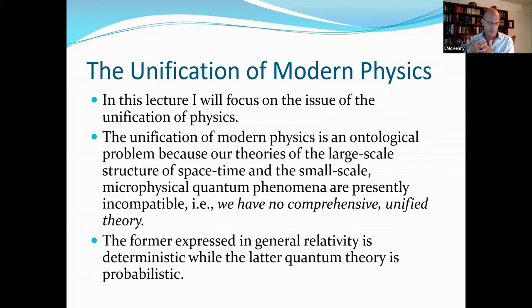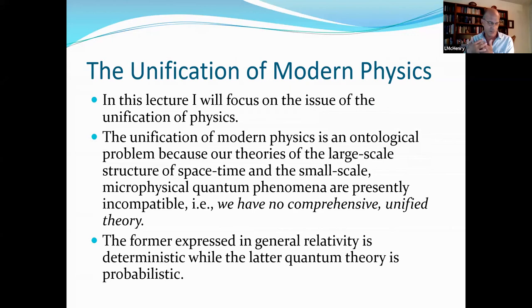So in this lecture, I'm going to focus on the more difficult and controversial parts of my book, namely dealing with the unification of modern physics. The unification of modern physics is an ontological problem because our theories of the large-scale structure of space-time and the small-scale micro-physical quantum phenomena are presently incompatible.